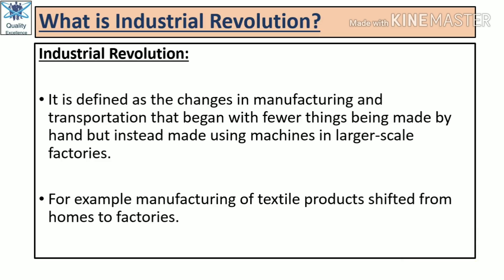Let us know what is Industrial Revolution. It is defined as the changes in manufacturing and transportation that began with fewer things being made by hand but instead made using machines in large-scale factories. Basically, it is a revolution from single-piece, skill-based manufacturing to machine manufacturing and large-scale manufacturing in factories. For example, manufacturing of textile products shifted from homes to factories — sarees, clothing materials, sculptures, etc., which were previously homemade, were transferred to large-scale factories.